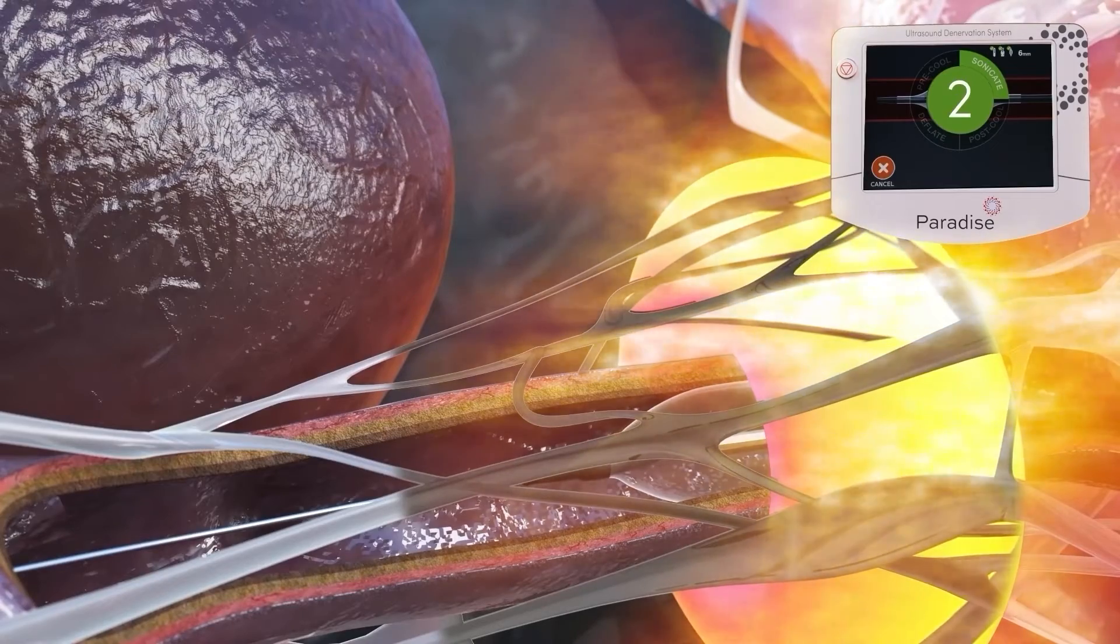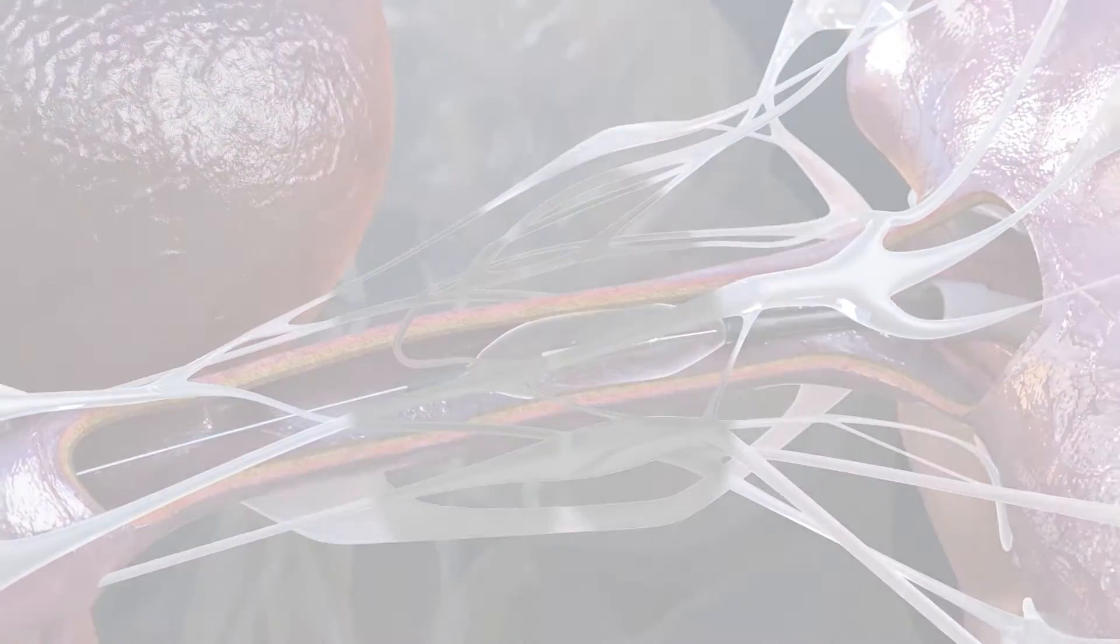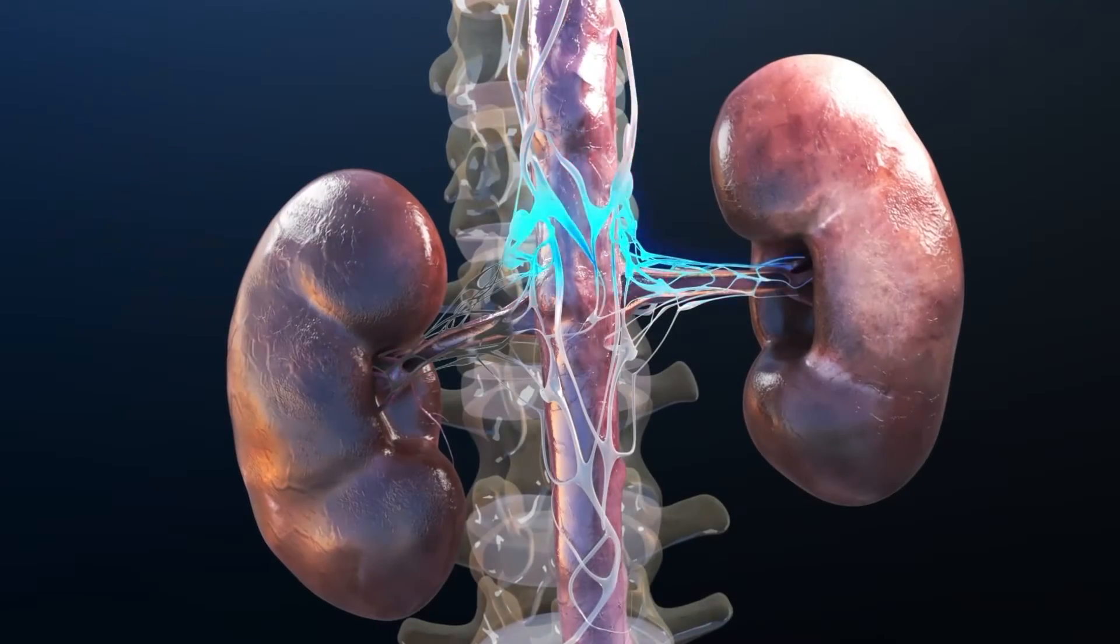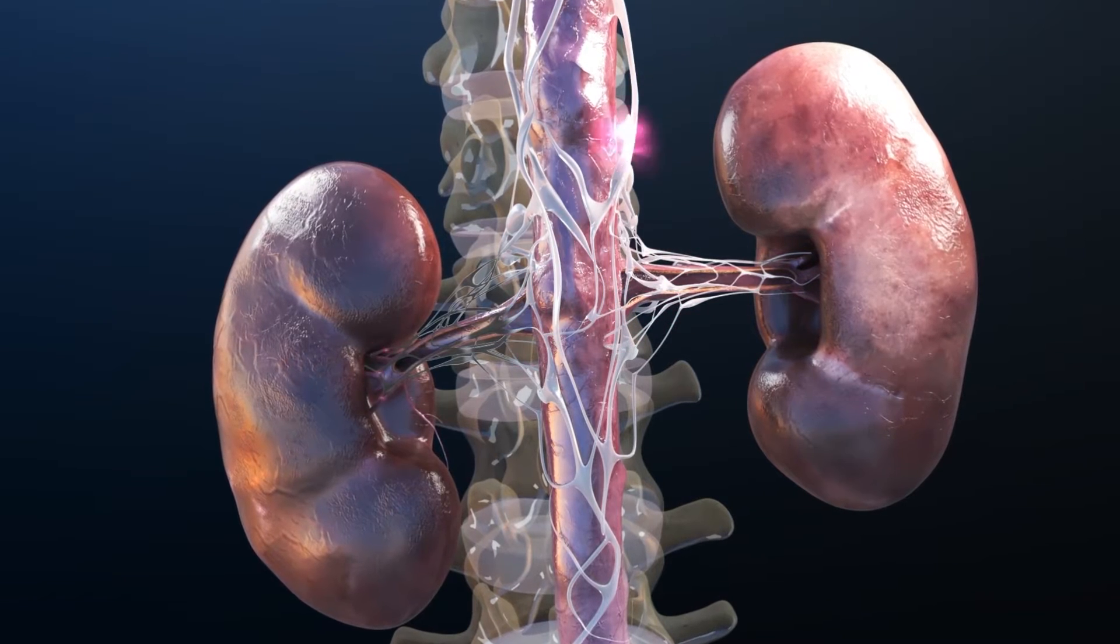The Paradise treatment strategy is two to three sonications per each main renal artery, with each sonication lasting seven seconds. No treatment of the distal branches is needed to achieve clinical benefit.